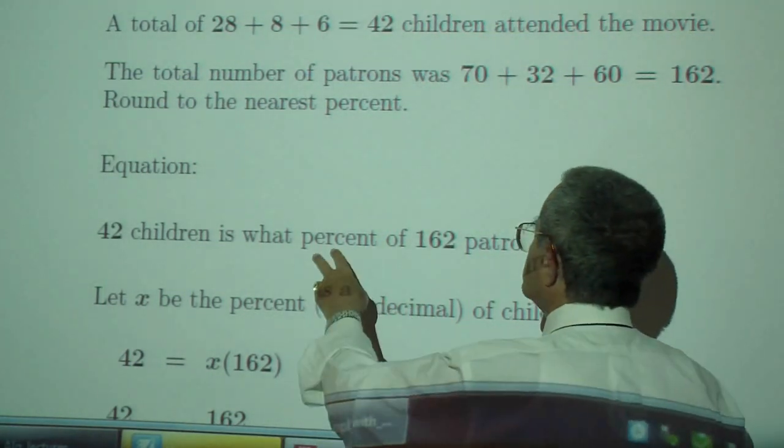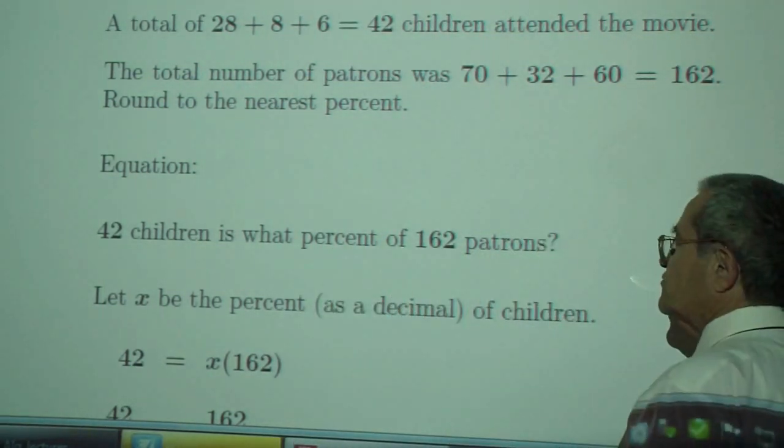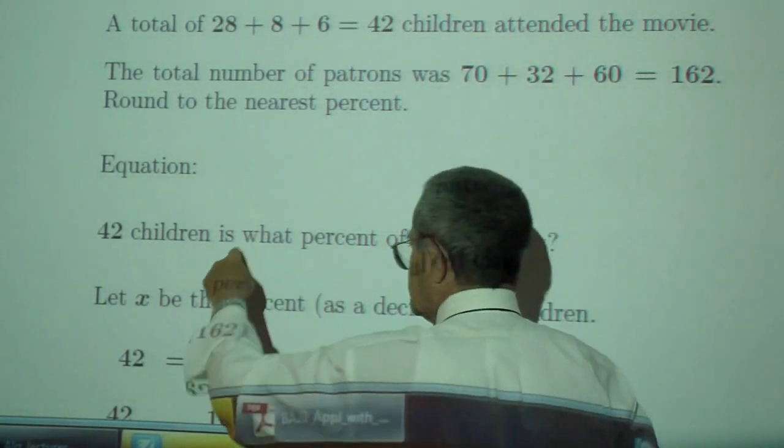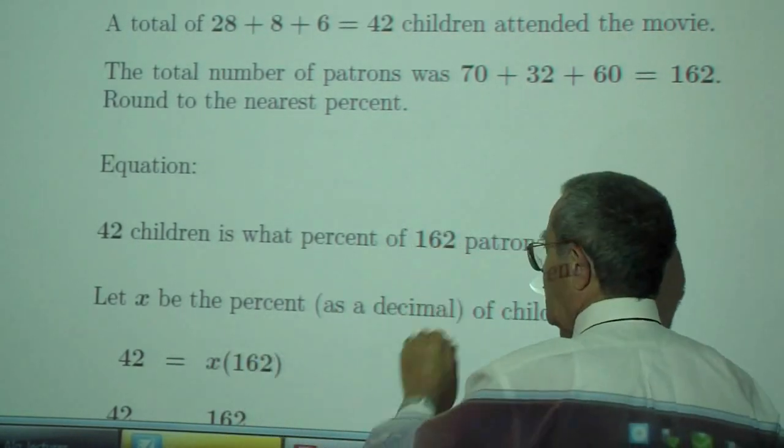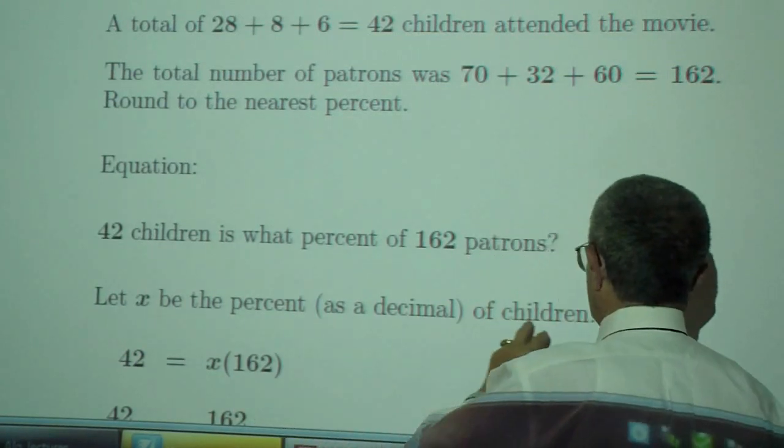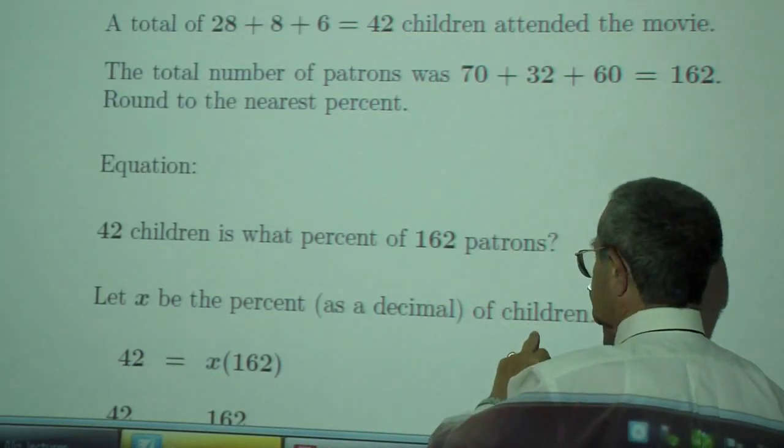42 children is what percent of 162 patrons? Again, the 'is' equals the equal sign. 42 is what percent - the unknown - of, multiplication, children, or patrons, I mean.